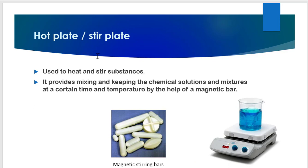Next we have the hot plate or stir plate. This is a heating plate which gets heated as per our setting — for example, if we set it to 60 degrees Celsius, it will heat up to that temperature. It also has a magnetic stirrer base, so we can do two things simultaneously: heating and stirring of the media. For instance, if I have put NaCl in water and want to stir and heat it simultaneously, I place the beaker on this plate and it will stir using the magnetic bar while the hot plate heats the contents.